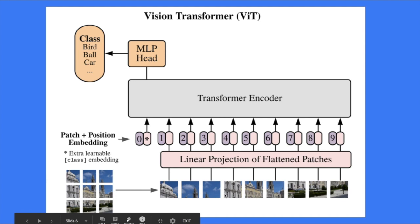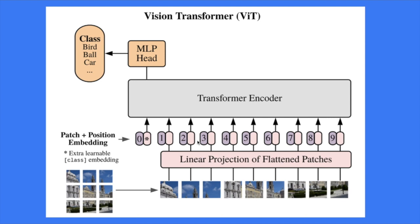You need a linear projection of the flattened patches, which is called patch embedding — in the NLP context it's called word embedding or word-piece embedding. You also add a position embedding. Position embedding can be done using a sine wave to represent different positions. If you're not familiar with the transformer architecture, I'll put a link to my video explaining transformers in the description below.